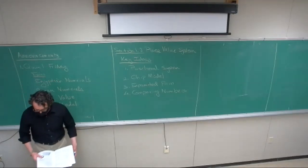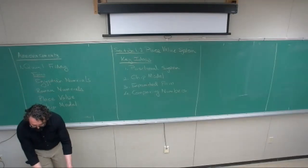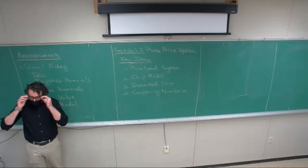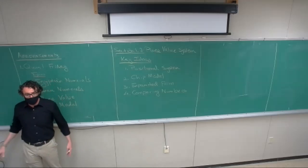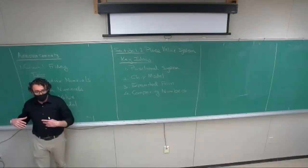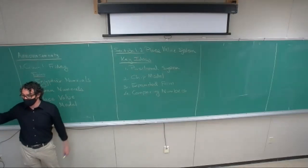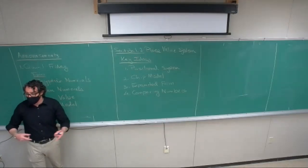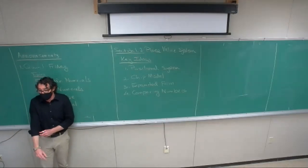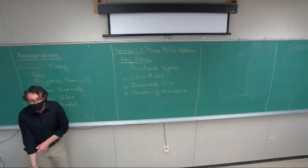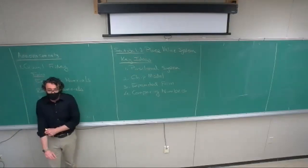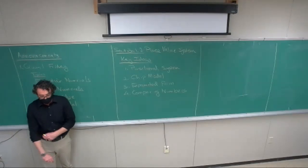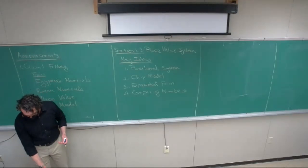The positional system is also called the Hindu-Arabic numeral system. It basically took over. Starting in the Middle East, during the Renaissance when Europeans started trading with people in the Middle East, they adopted that number system just because it was a lot easier. If you don't believe me, try doing a long division problem using Roman numerals — doesn't work so great.